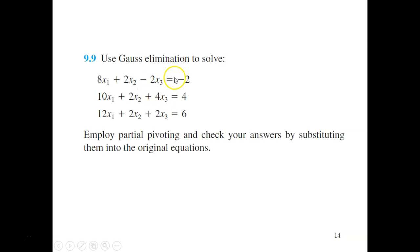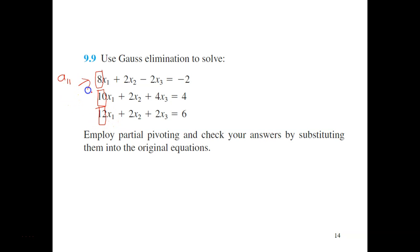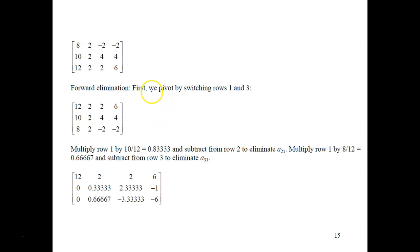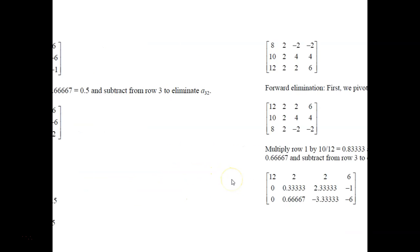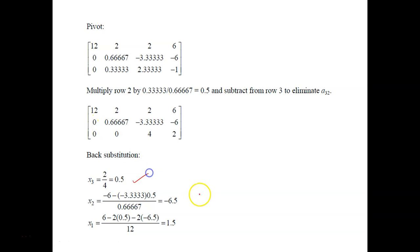Let's look at an example: use Gauss elimination to solve a problem with partial pivoting and check the answers. We look at all elements A11, A21, and A31. The first one is the smallest and the third row has the largest element, so we switch the first row with the third row. After solving with elimination, we get the answers.